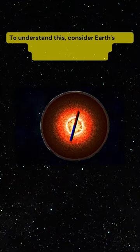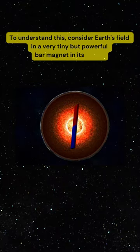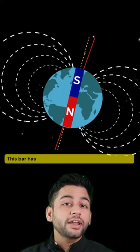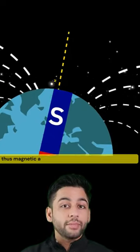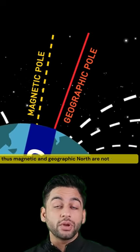Consider Earth's field in a very tiny but powerful bar magnet in its center. So this bar has been tilted away from the Earth's rotational axis and therefore the magnetic north pole and geographical north pole are not coinciding.